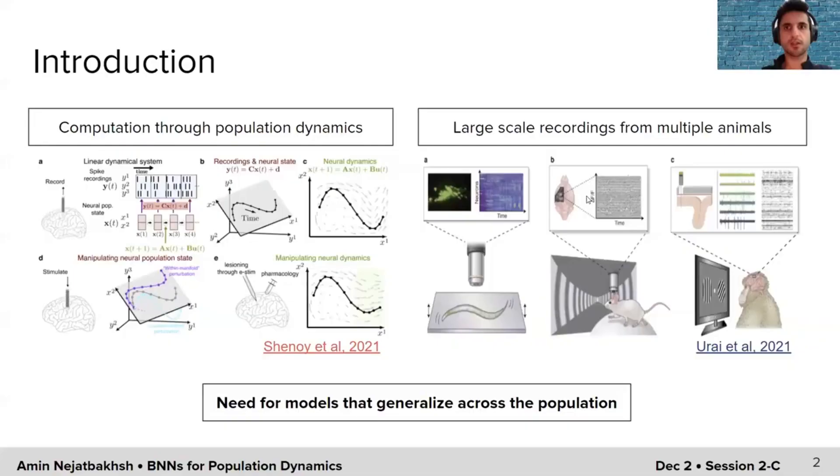To give a quick bit of motivation, I'm including this figure from a recent paper by Professor Chenoy showing how the computation can happen through the population dynamics of the brain, and how the observed signals correspond to a low-dimensional latent space, and the dynamics of the low-dimensional space can govern the observed signals. I've also included this figure from a very recent paper by Uri et al, showing that with large-scale recordings, now we can make hypotheses that were not possible before. These two pieces of motivation call for the need to develop models that generalize well across the population.